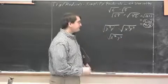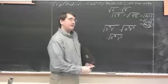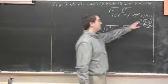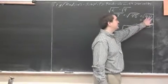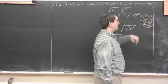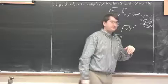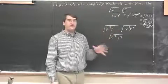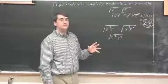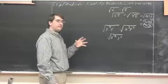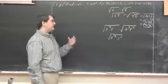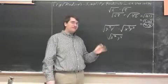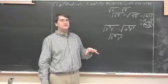But now what? When we have numbers, we can look for perfect squares and take them out. With variables, it's that same strategy — we're going to be looking for perfect squares and taking them out. But they're a little bit trickier to see.